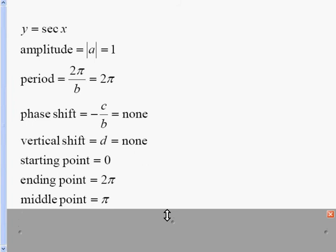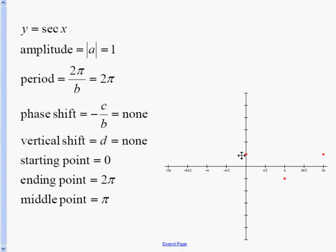If you remember the cosine graph, the starting point started at a max. The middle point went to the minimum, and the ending point went back to the max. So those points are the same. I have a max, a min, and a max.